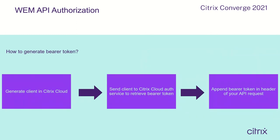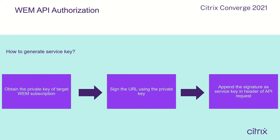How will we generate a bearer token? The first step is generating a client in Cisco Cloud, then sending the client to the Cisco Cloud authorization service to retrieve the bearer token, and then applying the bearer token in the header of your API request. How will we generate a service key? The first step is to obtain the private key of the WAM subscription, then sign the URL using the private key, and then apply the signature as the service key in the header of your API request.